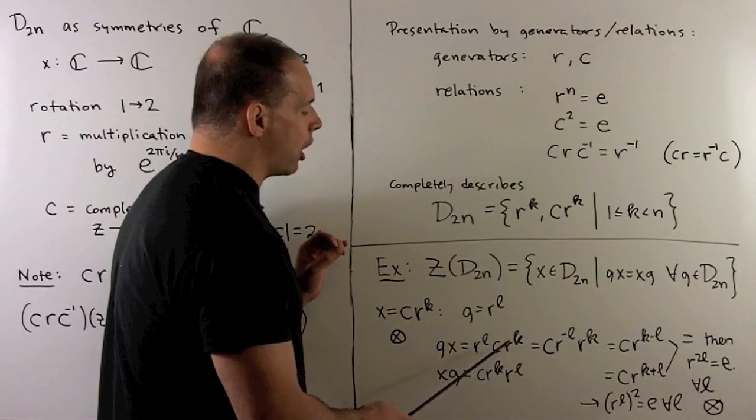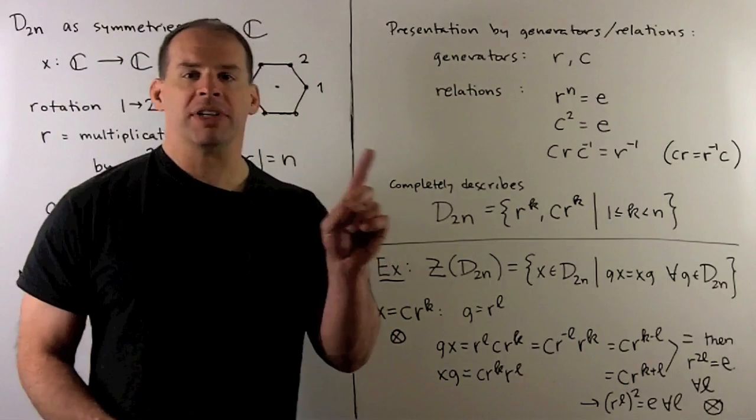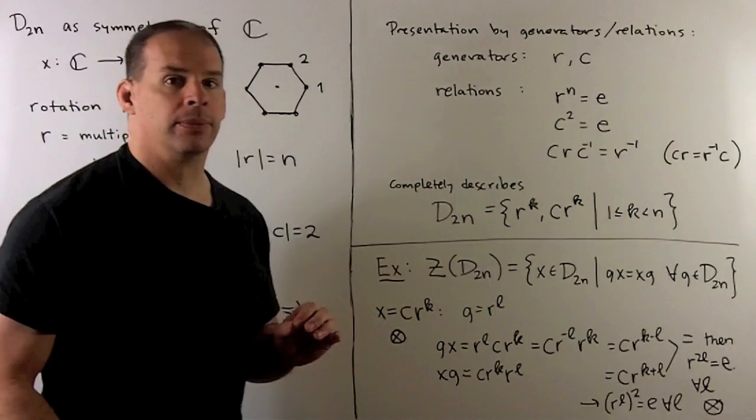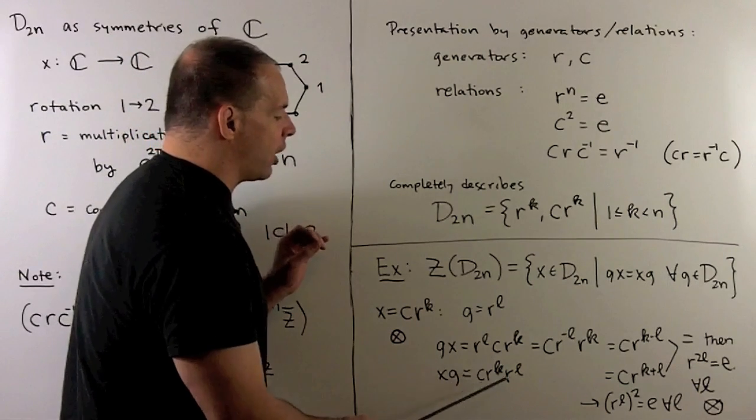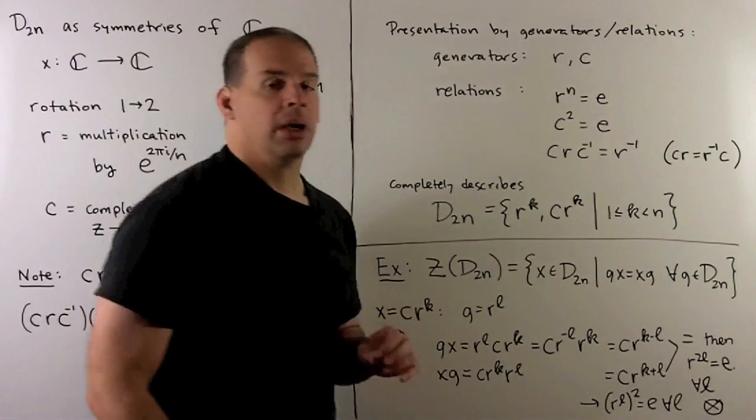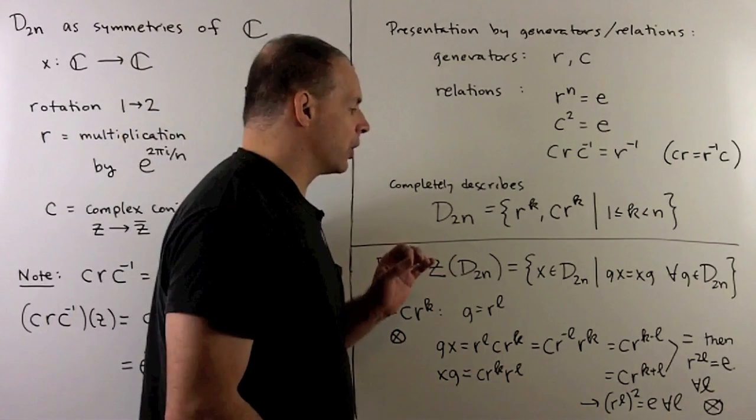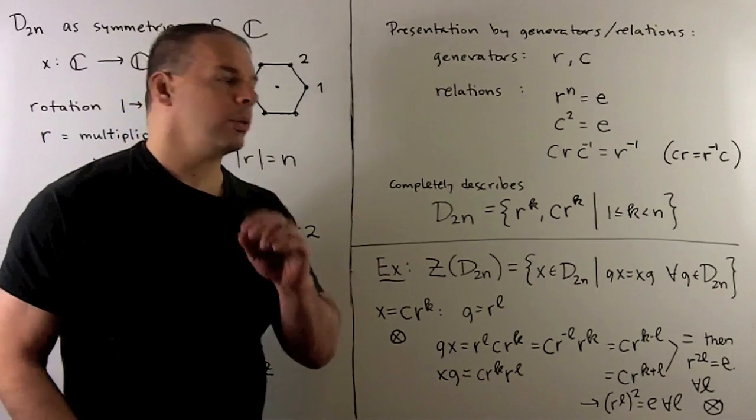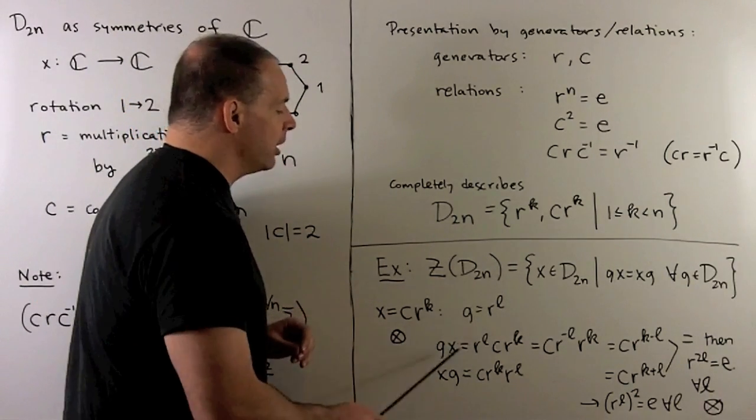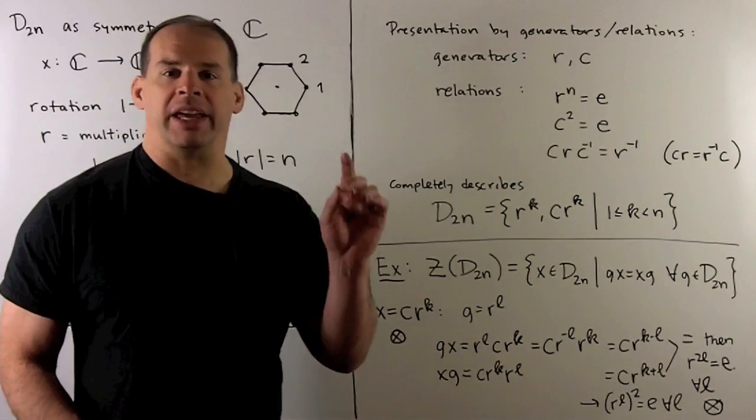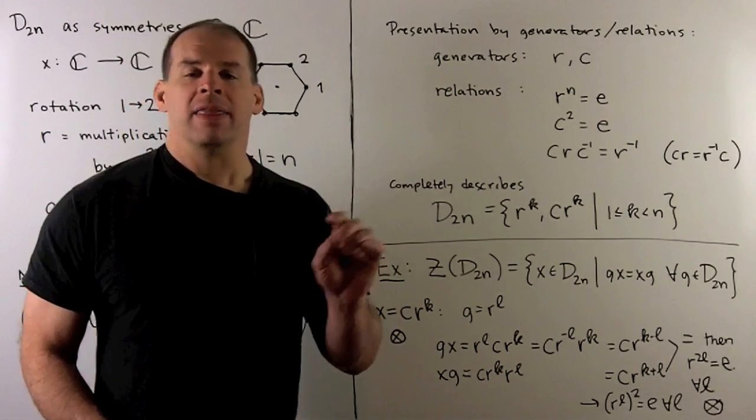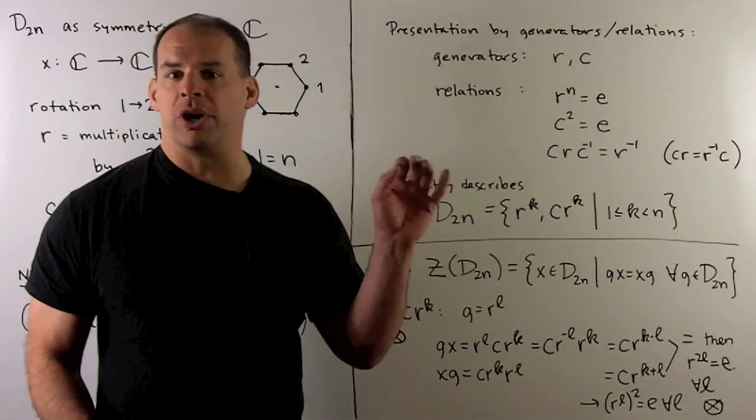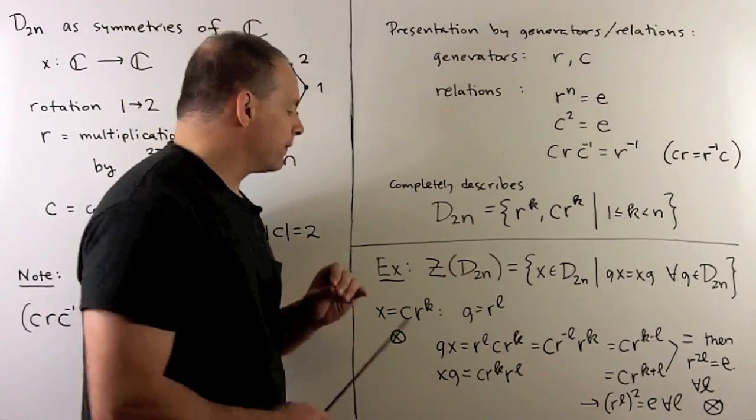So g times x, we have r to the l, c, r to the k. I want to switch the c and the r to the l. Every time I push an r past the c, it picks up a minus sign. So we have c, r to the minus l, r to the k, which is c, r to the k minus l. For x times g, we have c, r to the k, r to the l, which is just c, r to the k plus l. We set equal. Because we're in a group, we can cancel, so the c's go away and the r to the k's go away. So I have r to the l equals r to the minus l. Pushing everything to one side says r to the 2l equals e. Note, the l here is arbitrary. We have to have this happen for all rotations. So that means r to the 2l equals e for all l. If we bring the 2 to the outside, that says every rotation is of order 2. If I'm working with a triangle or something with more vertices, that doesn't happen. So we'll never have a reflection in the center here.